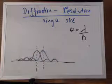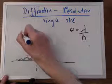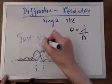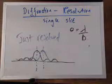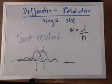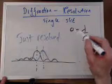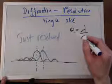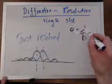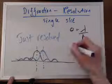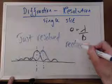Okay, and that's what it looks like. So that is the condition: just resolved. Now when they're just resolved, you'll find that the angle, the angle subtended between them from the slit or the eye if you like, will be θ equals λ over B for a rectangular slit.